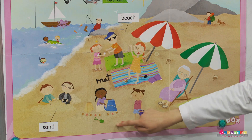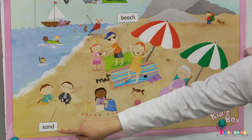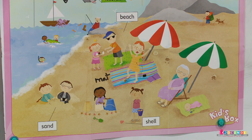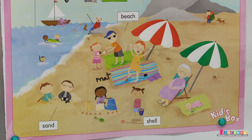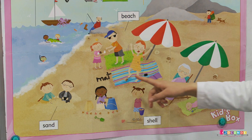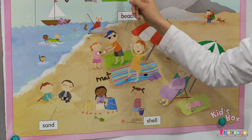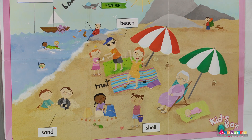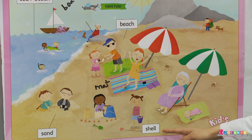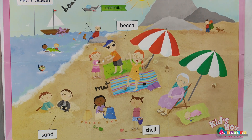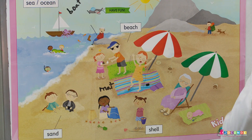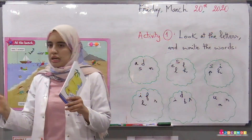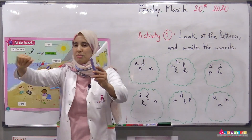Now here you have — look at this — it's sand. And here you have a mat, a sun, and you can also find a shell.